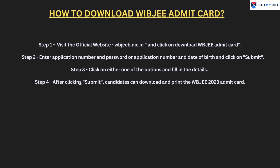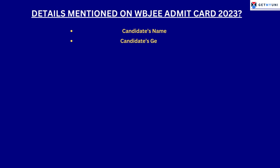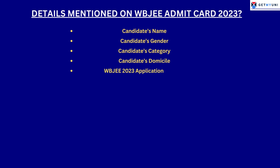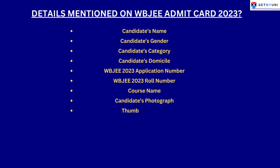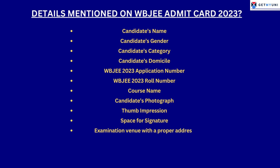The WBJEE admit card 2023 will contain the following information: candidate's name, gender, category, and domicile; WBJEE 2023 application number and roll number; course name; candidate's photograph; thumb impression; space for signature; examination venue with proper address; date and reporting timing of the examination; and exam day instructions.